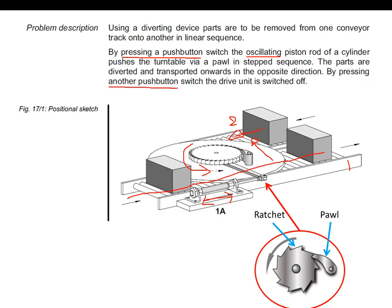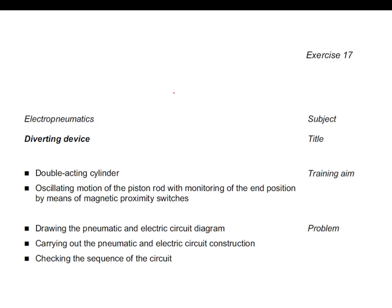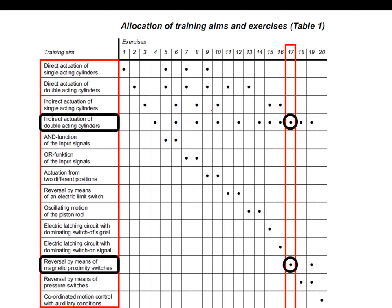How to start the system? By pressing a push button. And how to switch it off? By pressing another push button. So we have two push buttons. We need to use a double acting cylinder operated in oscillating motion, and the motion of the piston is being monitored by means of magnetic proximity switches. So we have two magnetic proximity switches or reed switches that monitor the end position of the piston, whether it is in extension or retraction.